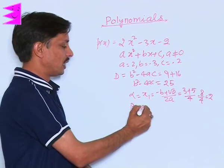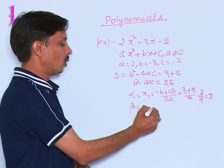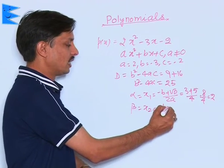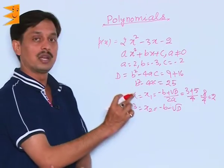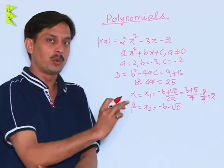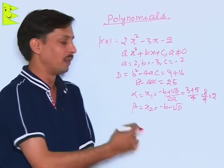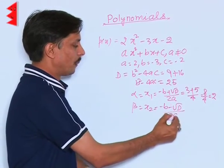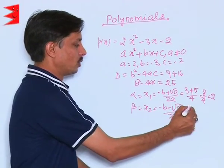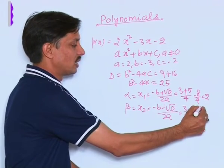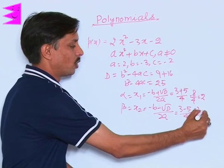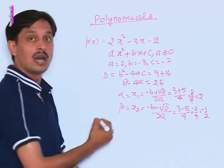Second zero is beta or can say x₂, and formula is (-B - √D), where D means in shortcut the value of B² - 4AC is symbolically written as capital D, upon 2A. So this becomes 3 - 5 upon 4, which gives us the answer as -2 by 4, or you can say -½.